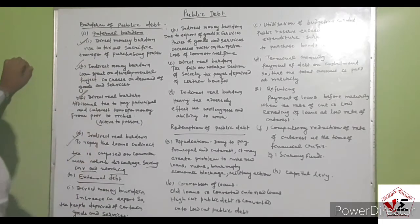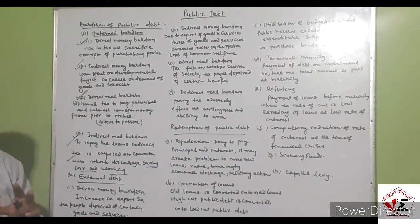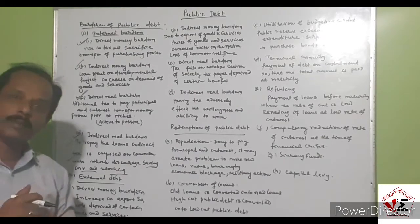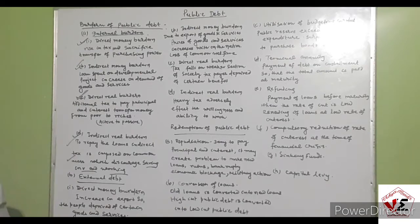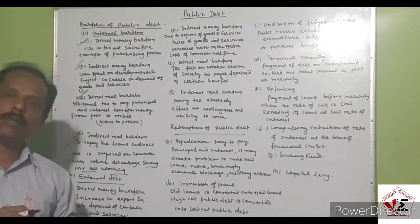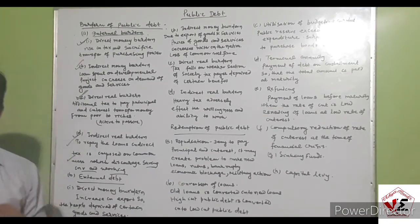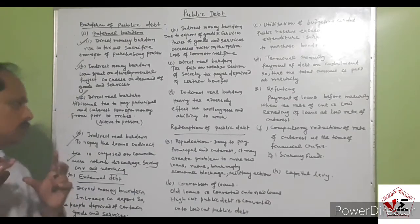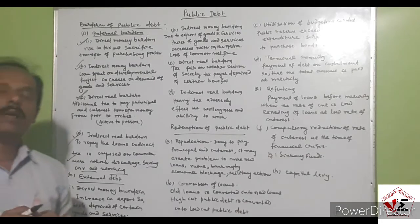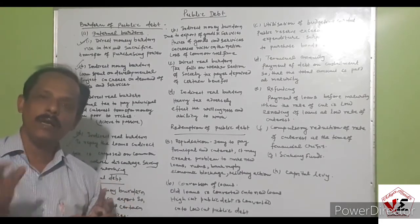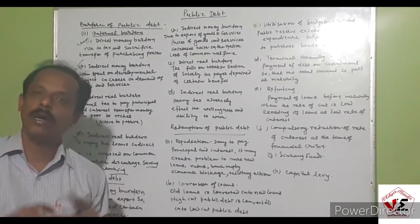So internal debt creates four types of burden: direct money burden, indirect money burden, direct real burden, and indirect real burden. Now, external debt is the debt brought from other nations of the world. Internal debt is raised within the nation from the central bank, commercial banks, financial institutions, or the public. External debt is sourced from the World Bank, IMF, or other international organizations.